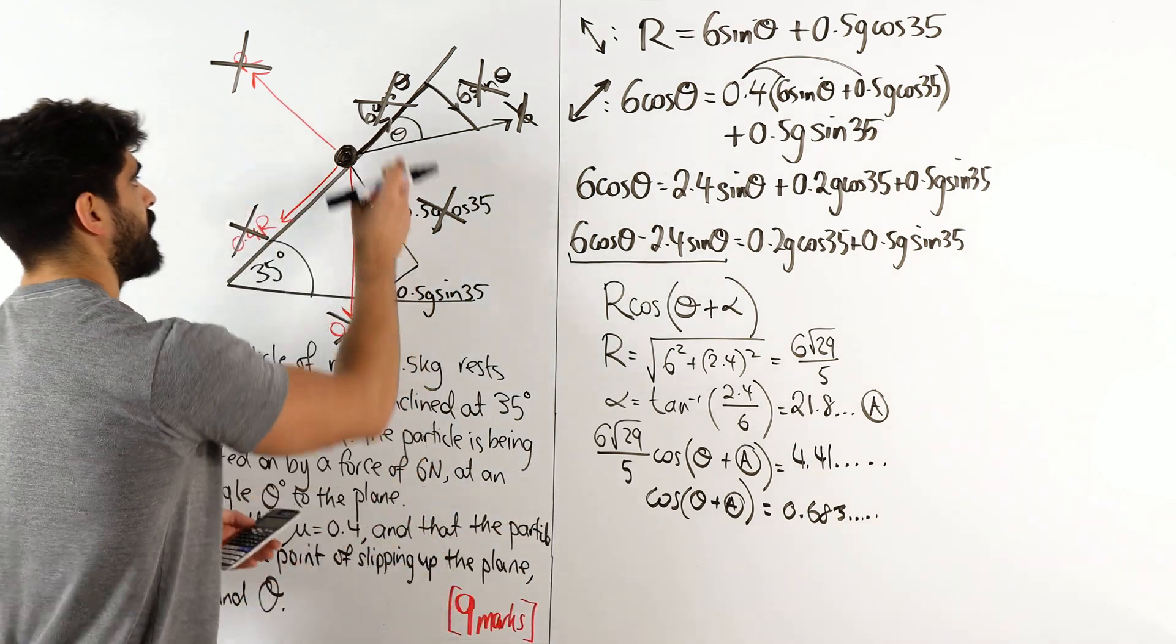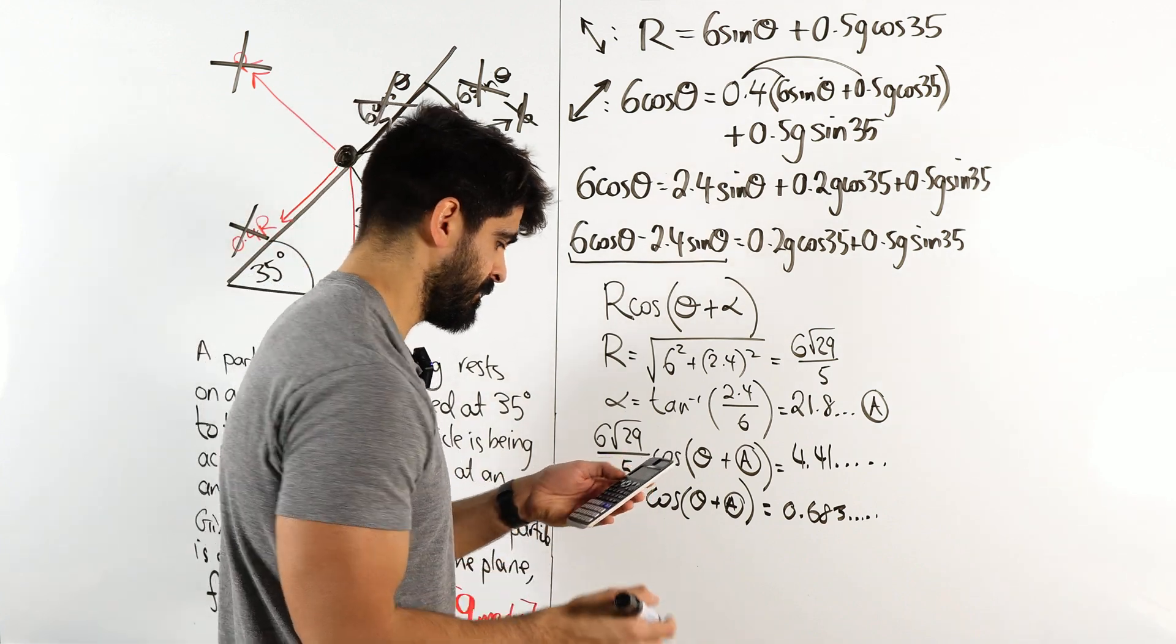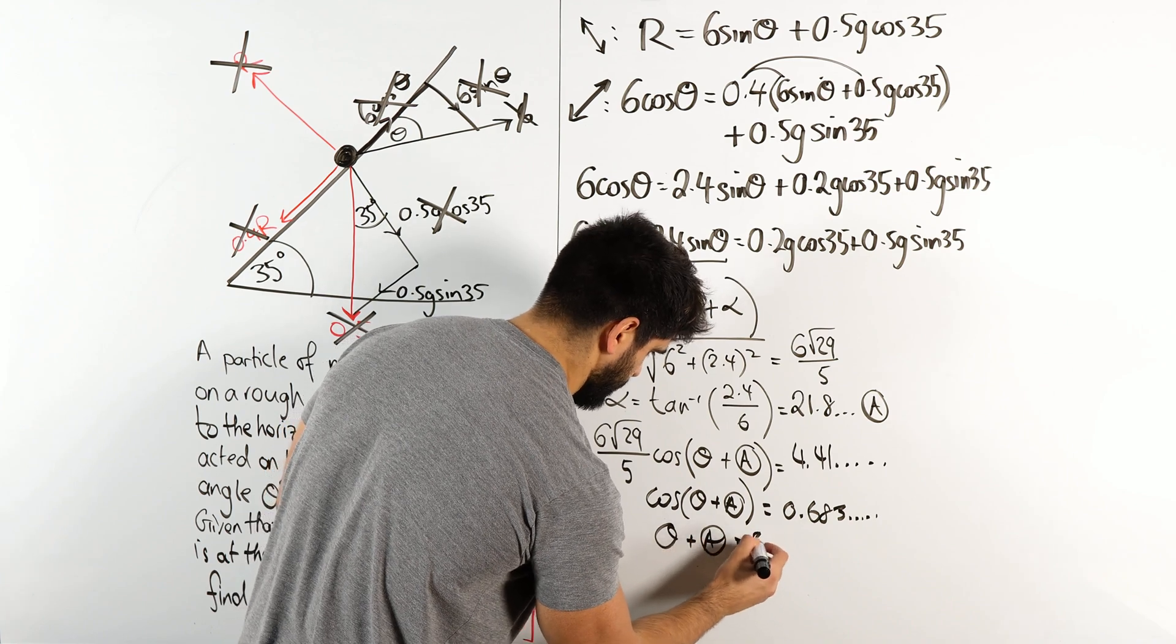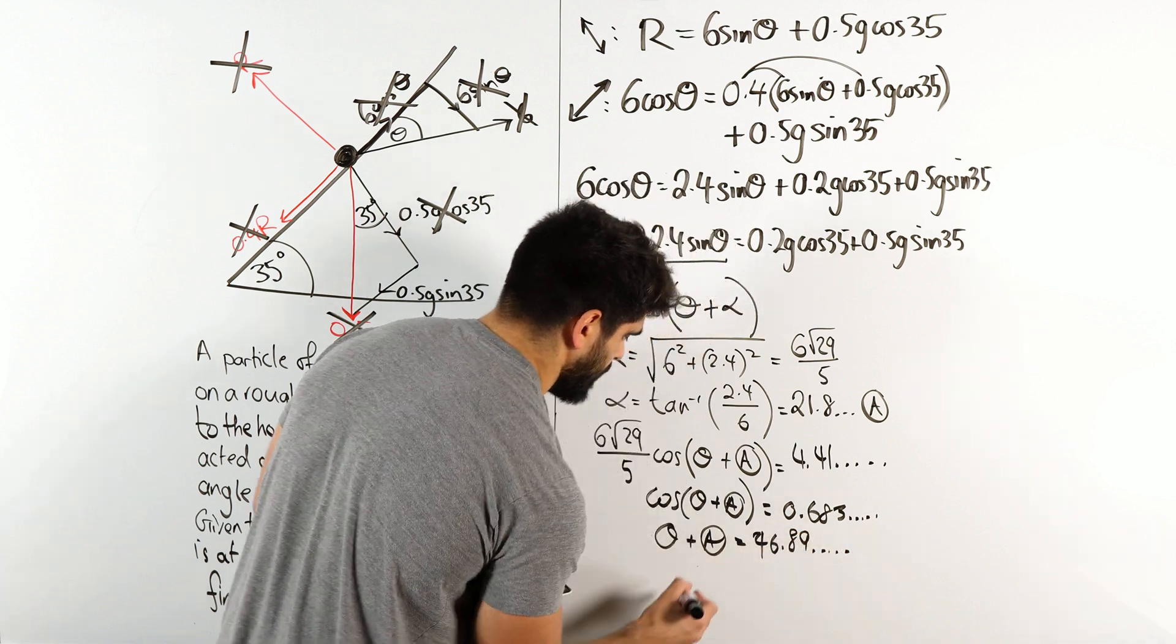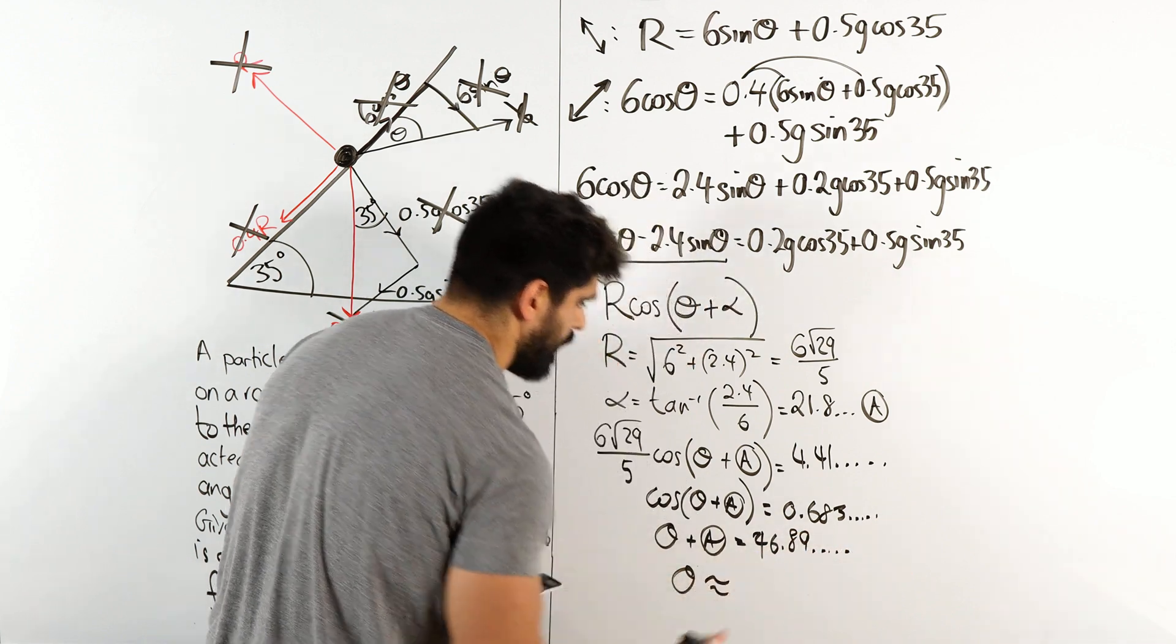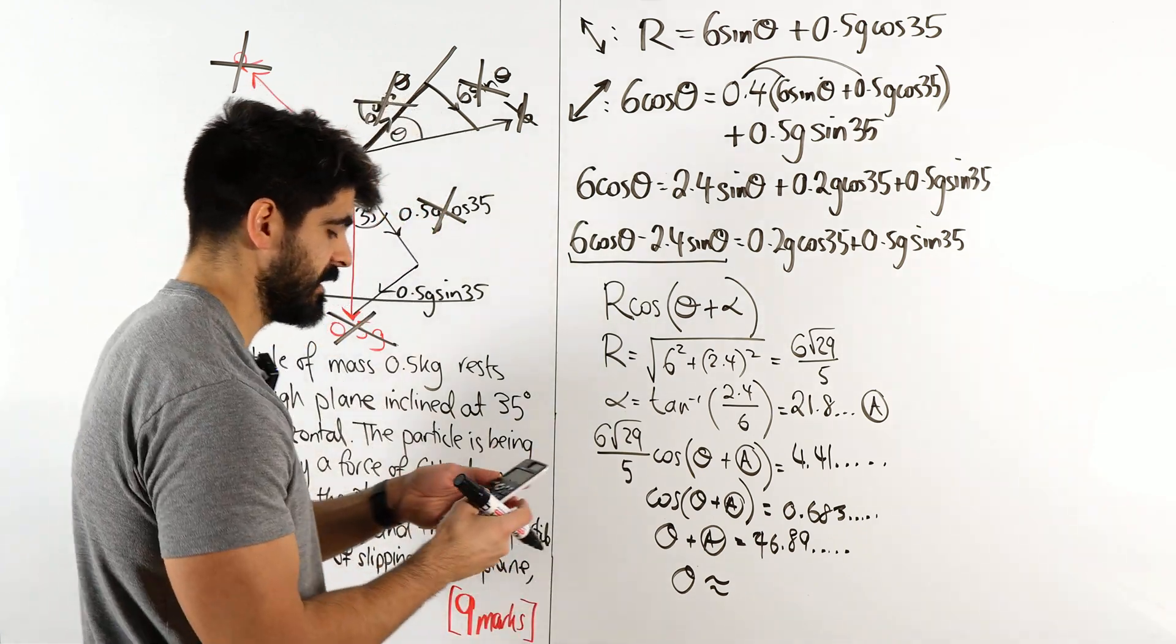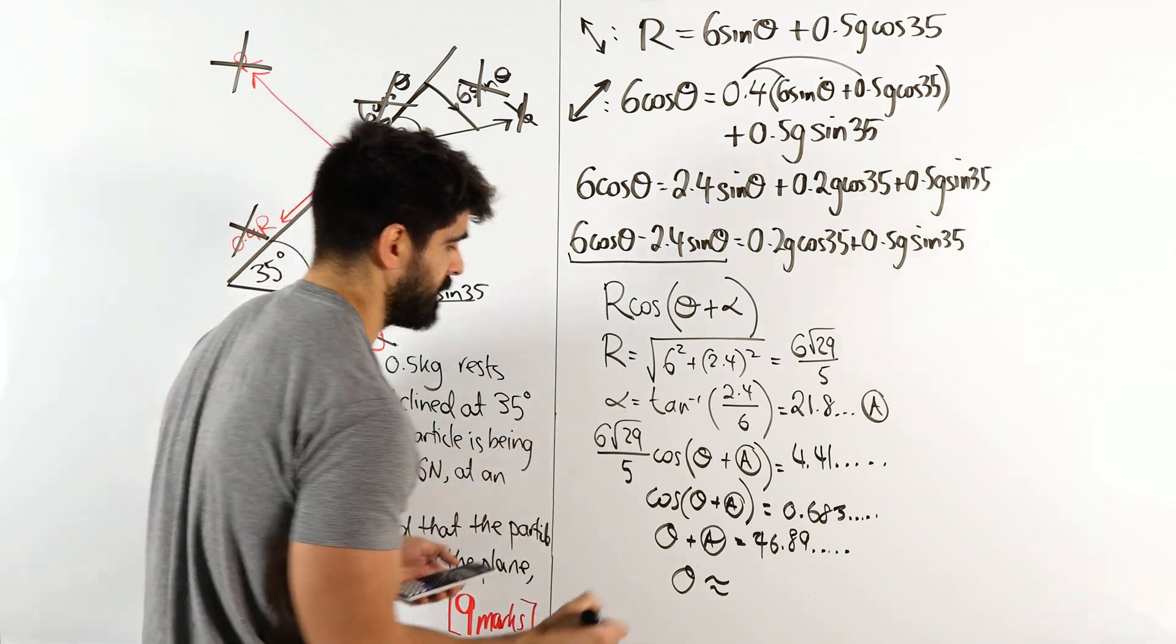Inverse cos answer, so in terms of the range, we know that theta is acute. So inverse cos of the answer, theta plus the stored A is 46.89 dot dot dot. And now I'm going to subtract A and I'm going to round it to two significant figures because we use gravity to be 9.8. About 25 degrees.